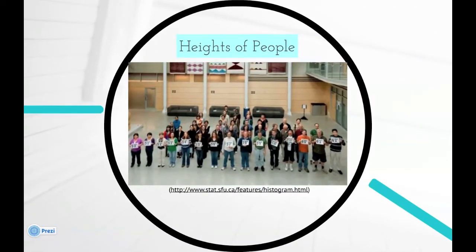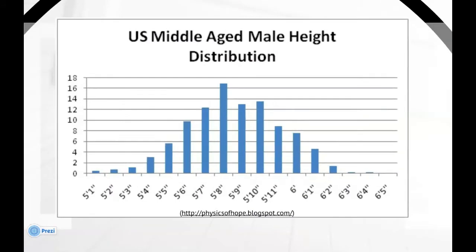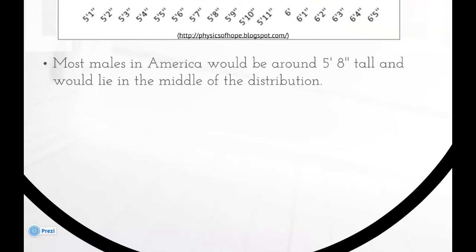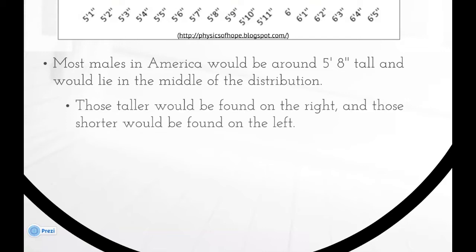Heights of people, in particular, the heights of middle-aged men in the US. Most males in America would be around 5 feet 8 inches tall and would lie in the middle of the distribution. Those taller would be found on the right, and those shorter would be found on the left.